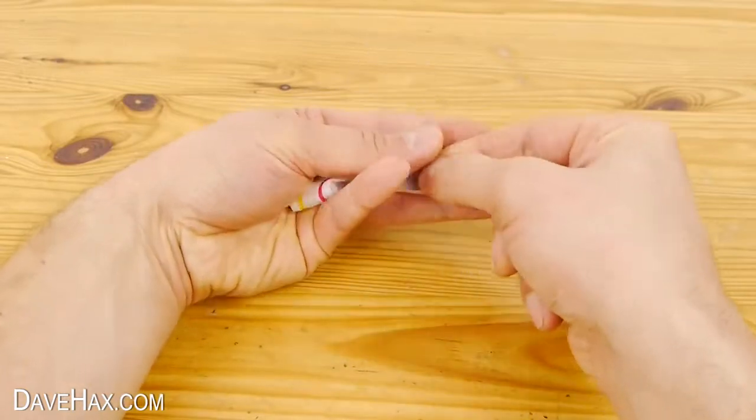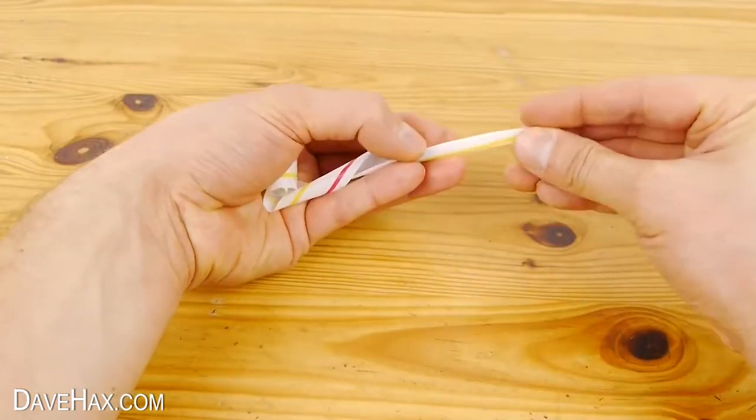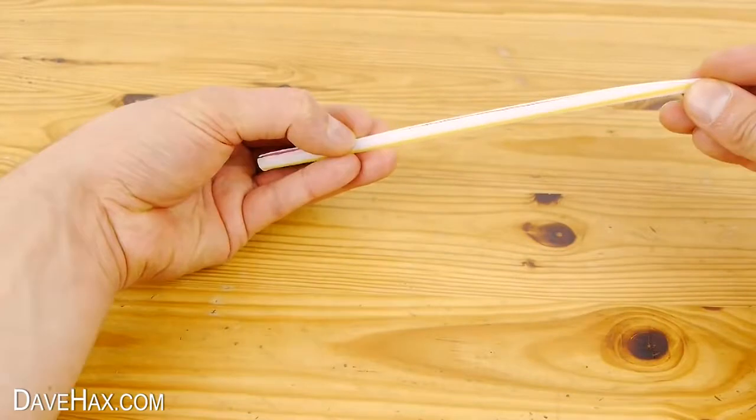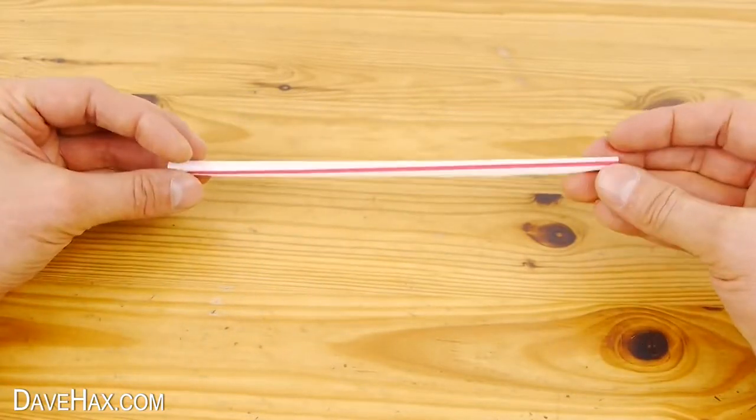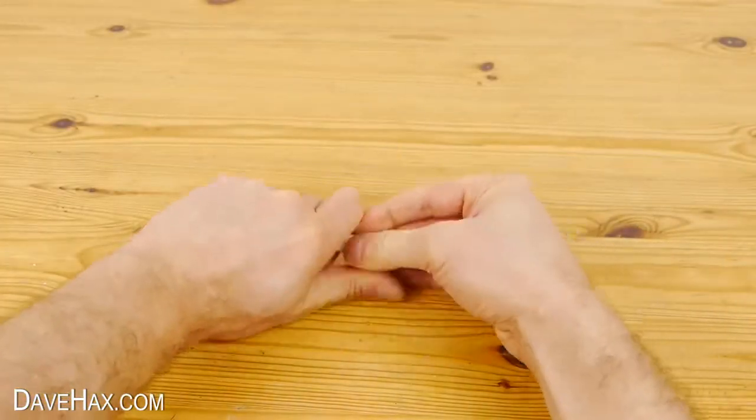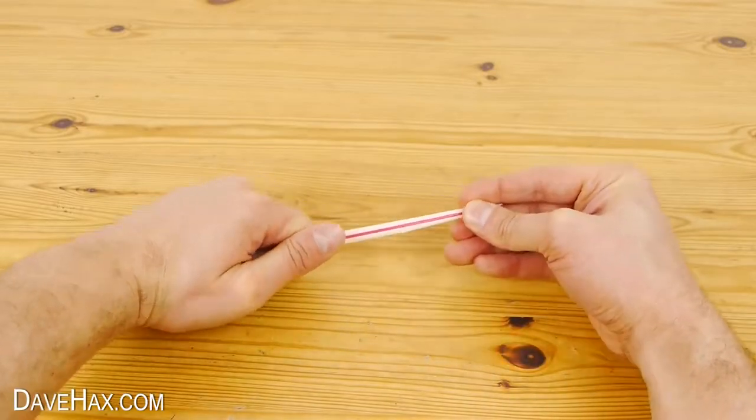And when you come to undo it, pull it through your fingers and let it all uncoil in the palm of your hand. Hide this from whoever you're showing it to and it'll look like you're pulling a straw from out of your hand.